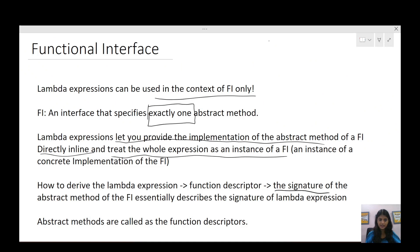So how do we derive these lambda expressions? There is a term called function descriptor. Whatever is the input parameter of that one abstract method and whatever is the return type of that abstract method — that is nothing but the function descriptor of the lambda expression we write for it. The input parameters and the return type of the abstract method of the functional interface become the function descriptor. Basically, abstract methods are called the function descriptors.